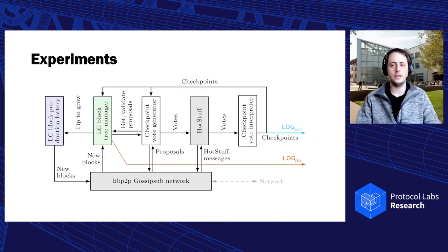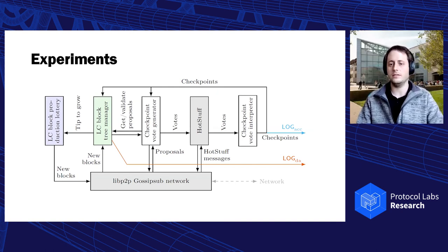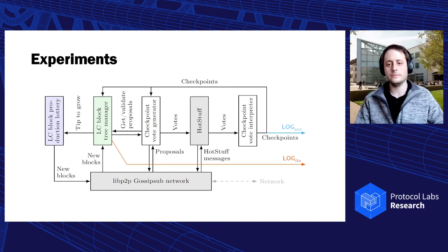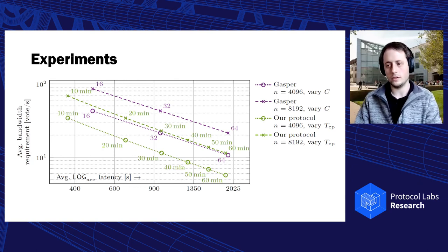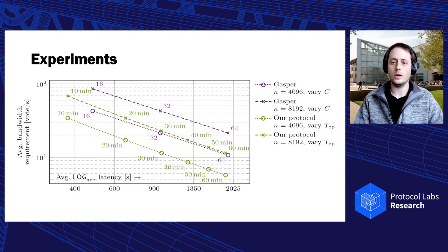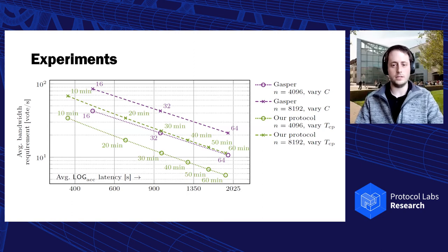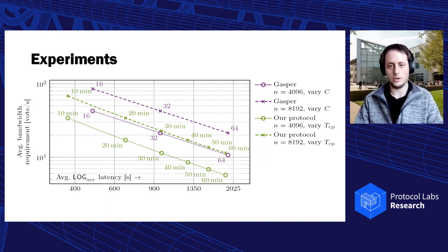We implemented this construction in a prototype using a permissioned longest chain protocol and a HotStuff implementation — specifically Antonio's implementation, who was talking yesterday — and we took LibP2P's gossip sub network. One of our interests is comparing it to Gasper, a simplified version of the Ethereum beacon chain protocol. Here you see a plot of the average required bandwidth versus the accountable ledger latency for our protocol and for Gasper. We can support roughly the same bandwidth and the same latency for twice as many participants.